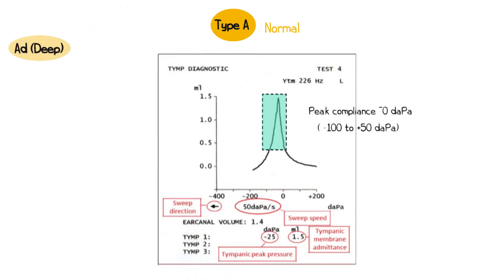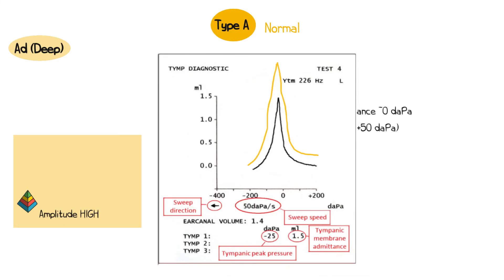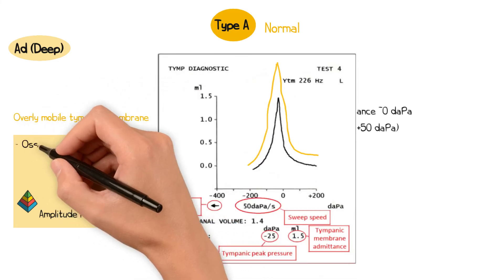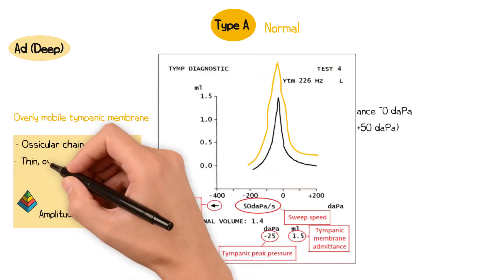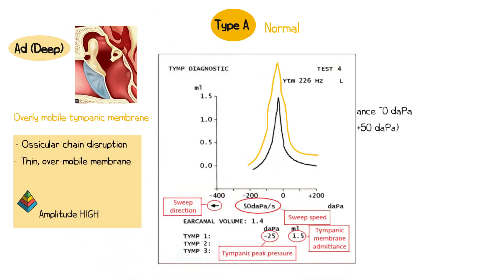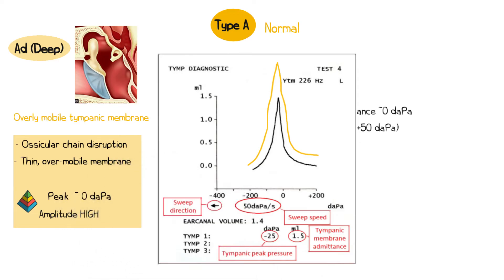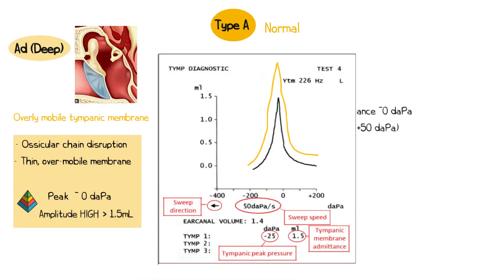A type AD, or deep trace, represents a higher than normal peak amplitude, indicating an overly mobile tympanic membrane, potentially due to ossicular chain disruption or a thin hypermobile tympanic membrane. In this case, the peak compliance is still at 0 decapascals, though the amplitude of the peak is abnormally high — over 1.5 millilitres.